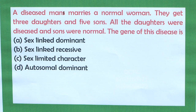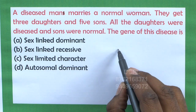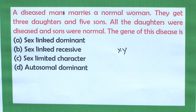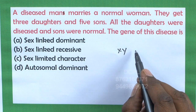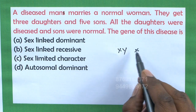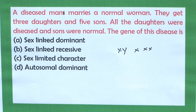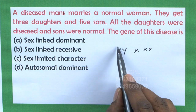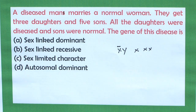Let us take the marriage between a diseased man and a normal woman. Males have one X chromosome and one Y chromosome, and females have two X chromosomes. If the male has a dominant gene on the X chromosome, the father donates the X chromosome to the daughters and the Y chromosome to the sons.